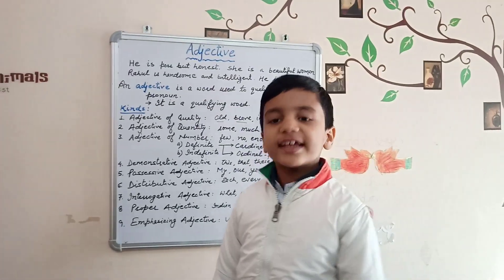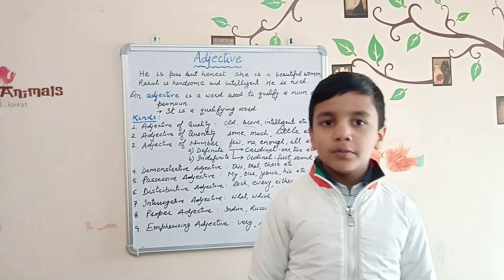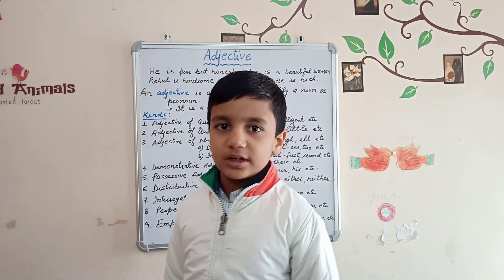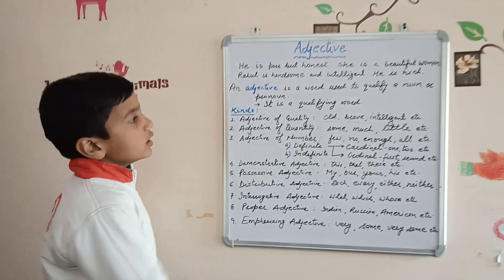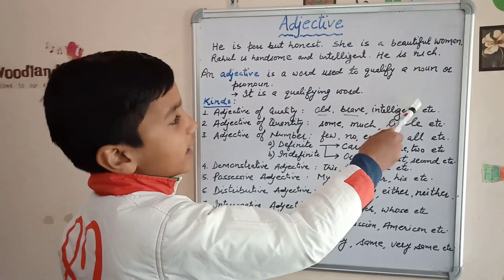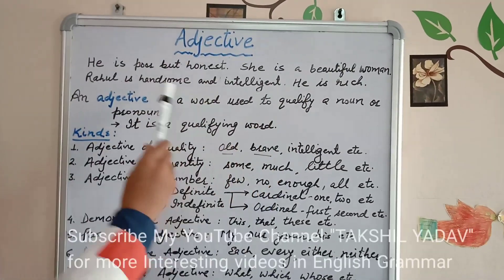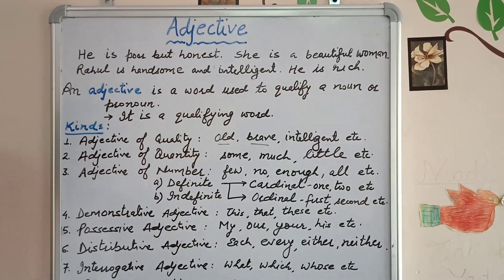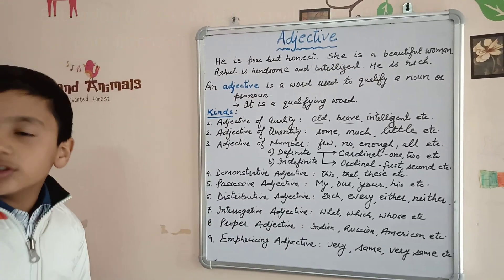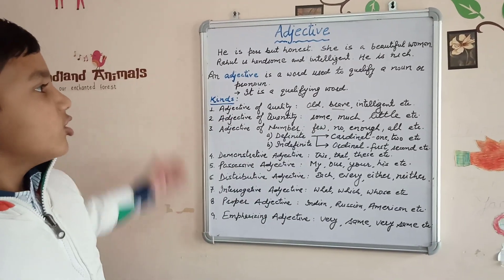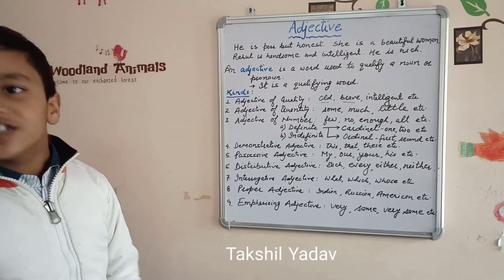Handsome and intelligent qualify and state the noun Rahul, and the word rich qualifies the pronoun he. From all these sentences, we can say that if we want to tell the quality of a noun or a pronoun, we use some special words. An adjective is a word that is used to qualify a noun or a pronoun. The words poor, honest, beautiful, handsome, intelligent, and rich are all adjectives because they qualify the nouns and pronouns he, she, Rahul, and he respectively.